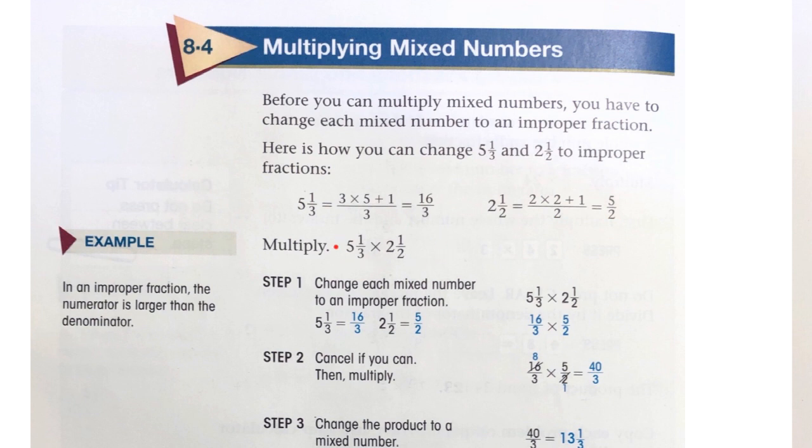Now you can multiply 5 and 1/3 times 2 and a half. So step 1, change each mixed number to an improper fraction like we did above. We get 16 over 3 and 5 over 2.